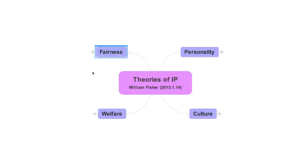Theories of the second type focus on personality. They argue that the law should be crafted to give people the rights or powers or protections they need in order to fully realize or enjoy personhood. These theories tend to be somewhat more popular in civil law countries, but they have increasing influence in other jurisdictions, including the United States.